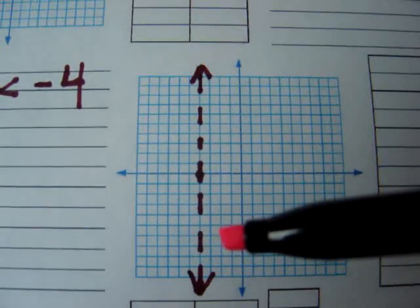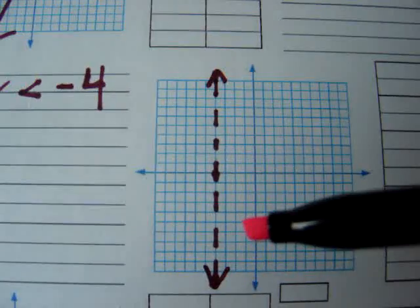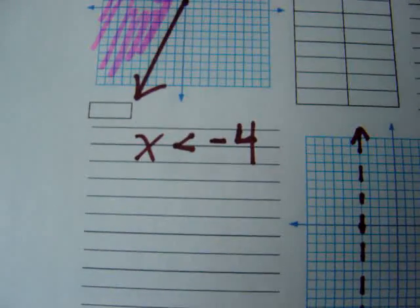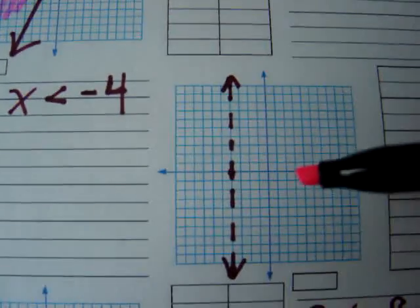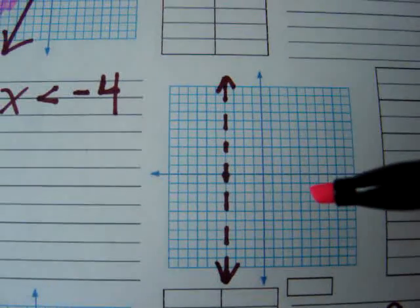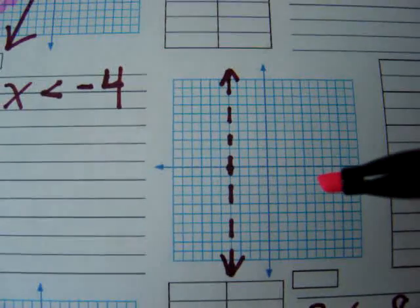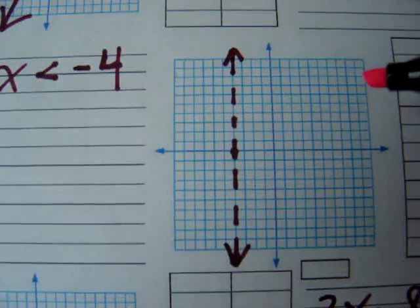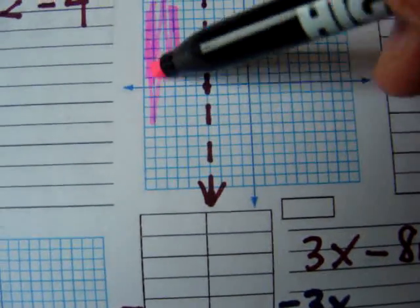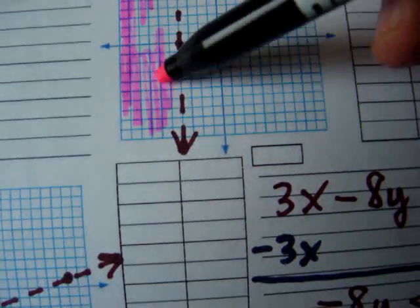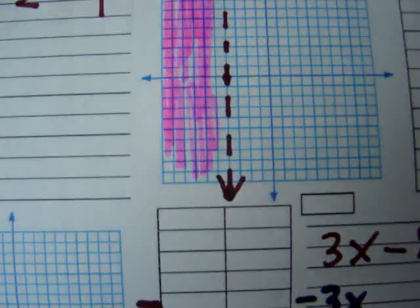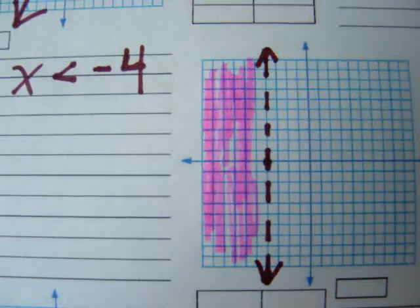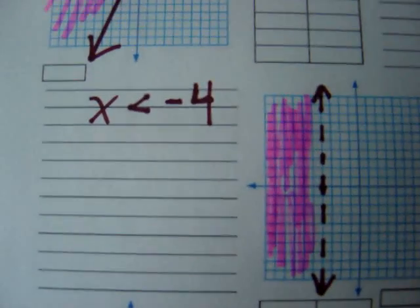Notice, this one is dashed and not solid. It's dashed because there is no equal to part, strictly less than. So, now think about it. Which values are less than negative 4? Well, less than is to the left, so all the values that make this true go to the left of the line. Those indicate all the x-values less than negative 4.